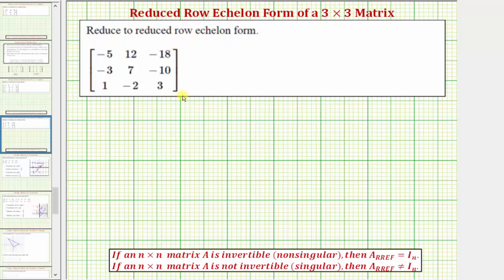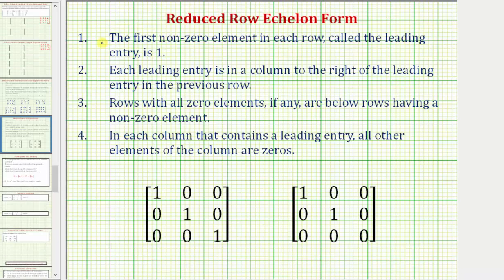We want to write the given three by three matrix in reduced row echelon form. For review, these four conditions must be met for a matrix to be in reduced row echelon form. If the first three conditions are met, the matrix would be in row echelon form. Number one, the first non-zero element in each row, called the leading entry, must be a one.